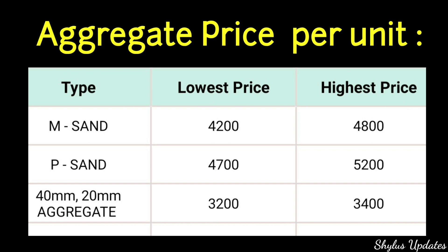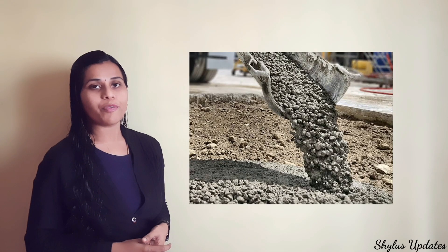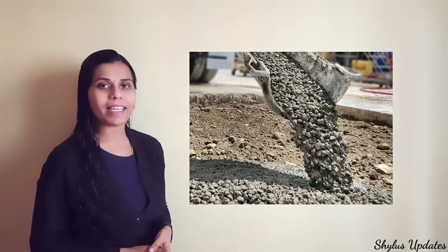Price list of aggregate per unit. Type, lowest price, highest price. M sand is from Rs.4,200 to Rs.4,800. P sand is from Rs.4,700 to Rs.5,200. 40mm–20mm aggregate is from Rs.3,200 to Rs.3,400.